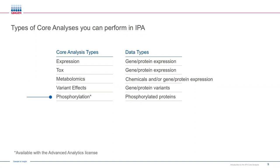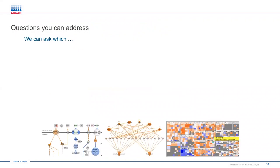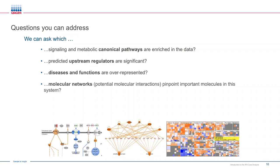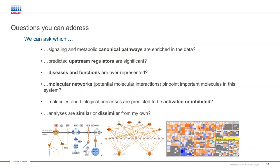We call this the core analysis because it's the main functionality of IPA. For all those analyses, you'll get answers to questions such as: which signaling and metabolic canonical pathways are enriched in my experimental system? What upstream regulators are affecting molecules in the data set? Which diseases and functions are overrepresented? Which molecules are highly interconnected and therefore biologically relevant? Which upstream regulators, pathways, etc. are predicted to be activated or inhibited? And which analyses show similarities or dissimilarities to mine?